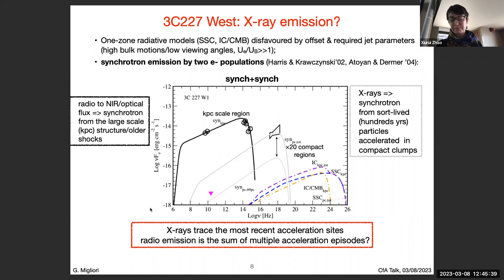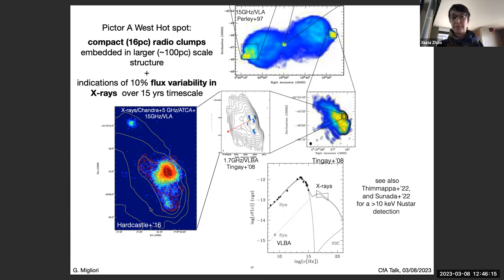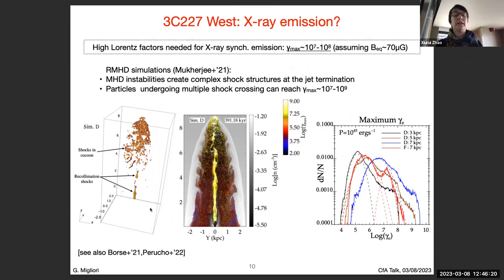One criticism of this model is that we need a high Lorentz factor for the particles, and a second criticism relates to the existence of a second population of electrons. However, recently there have been advances in radiative MHD simulations. I'm showing an example by a group led by Dipanjan Mukherjee, which shows that jets prone to MHD instabilities — such as kink instabilities or Kelvin-Helmholtz instabilities — can develop complex shock structures at the jet termination, where particles may reach the required Lorentz factor depending on the number of shock crossings they undergo.